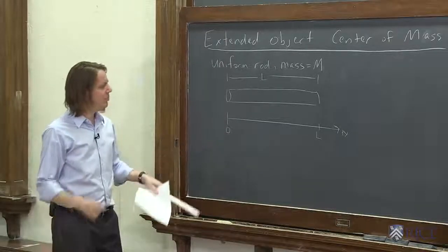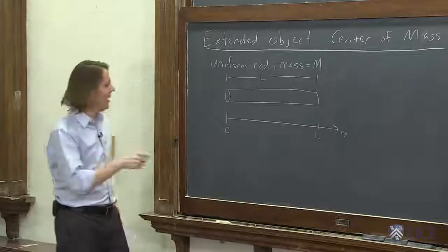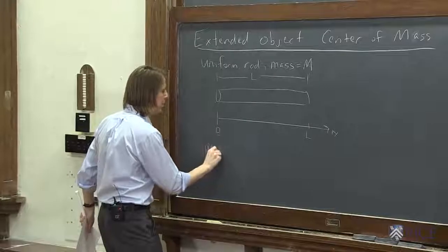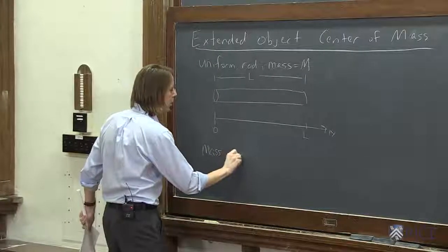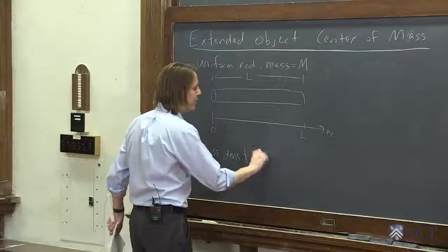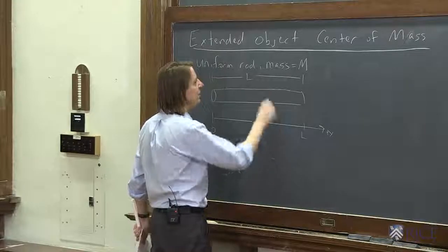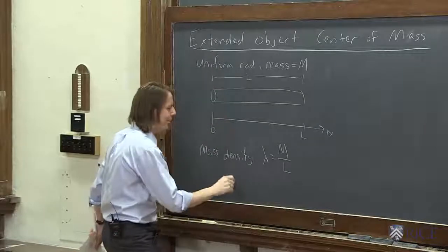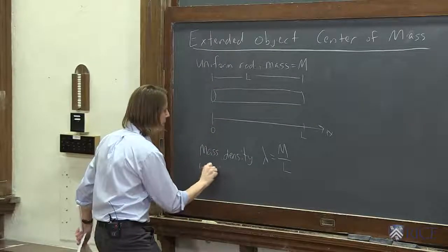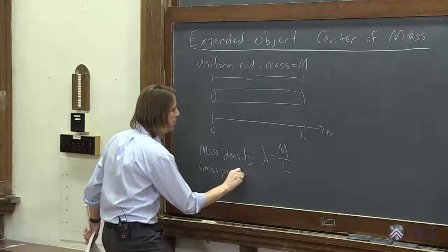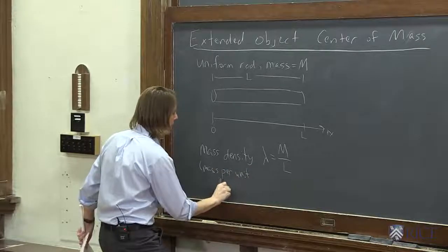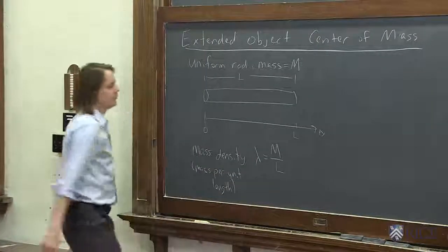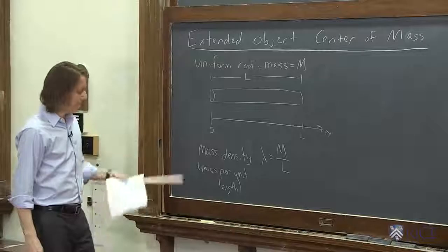We also need to be able to think about the mass density. So usually linear densities are called lambda. So we'll say lambda, the mass per unit length, is big M over L. So if you're not sure what to mean by mass density, mass per unit length.